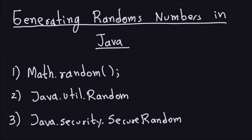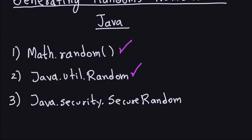Hello and welcome again. This is the fifth part of the videos on generating random numbers in Java. So far we had seen two ways to generate random numbers or booleans in Java: the first one is Math.random, and we also covered the Random class. This last part will cover Java Security's SecureRandom.